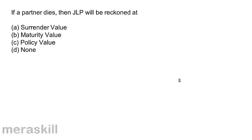A short quiz. If a partner dies, then JLP will be reckoned at: A, surrender value; B, maturity value; C, policy value; D, none. If a partner dies, it will be reckoned at maturity value. So the answer is B.